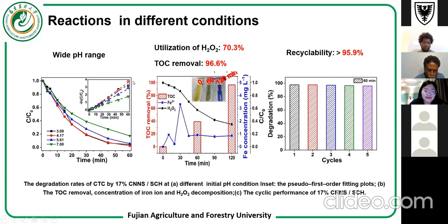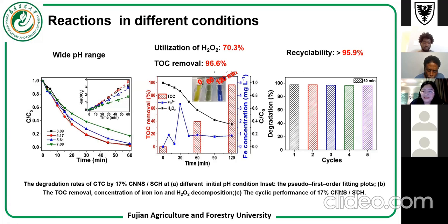We also studied the photo-Fenton pH limits. Our system can work very well even at pH ranging from 3 to 5.5, which is much broader than previously reported. Under optimal conditions, the hydrogen peroxide utilization rate was 70% and the TOC removal could reach 96.6%, which is remarkably high with a low catalyst dosage compared with previously reported materials.